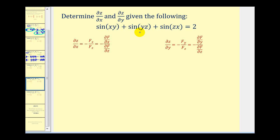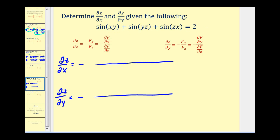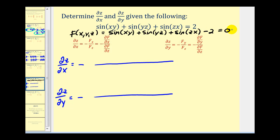Let's look at one that has trig functions. We want the partial of z with respect to x and the partial of z with respect to y. Notice the equation is not set equal to zero, so we rewrite it in the proper form: f(x, y, z) = sin(xy) + sin(yz) + sin(zx) − 2 = 0. Even if we forgot the minus 2, the derivative of a constant is zero anyway, but we should use the correct form.